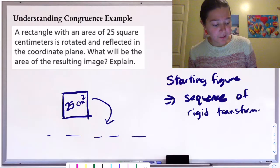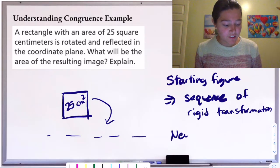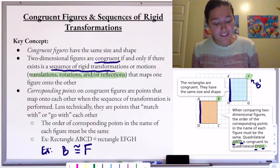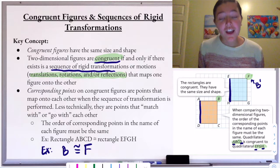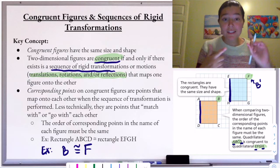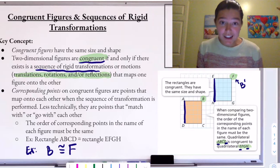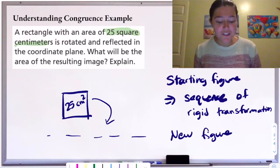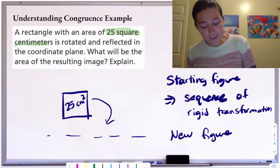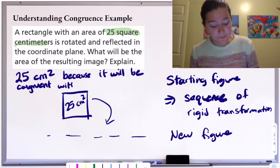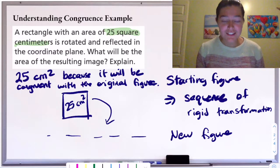When we take a figure, apply a sequence of rigid transformations, and get a new figure, our definition of congruence says those two figures are congruent — congruent if and only if there exists a sequence of rigid transformations that maps one onto the other. Congruent shapes have the same size and the same shape, which means they have the same area. So the resulting image will have an area of 25 square centimeters as well, because it is congruent with the original figure.